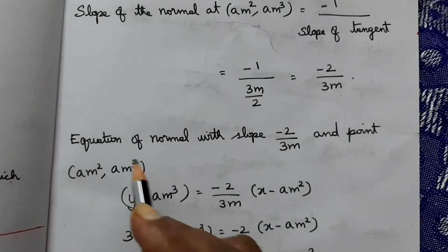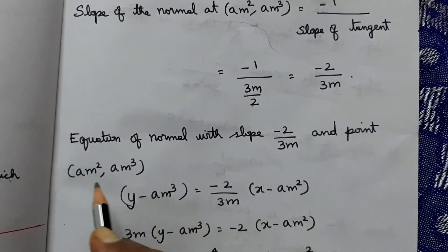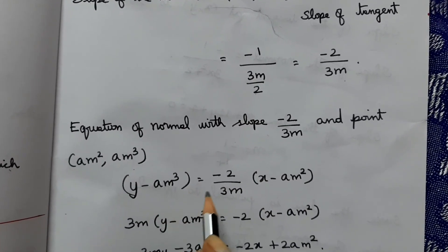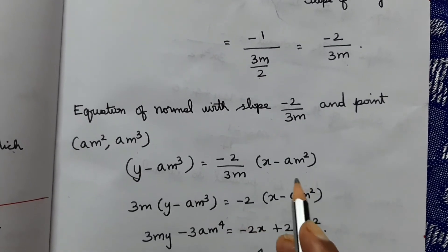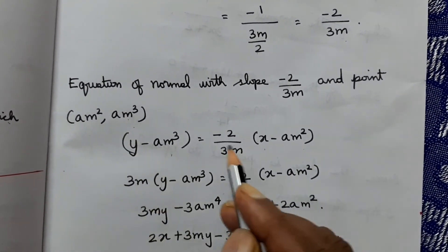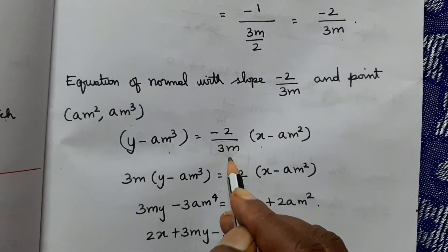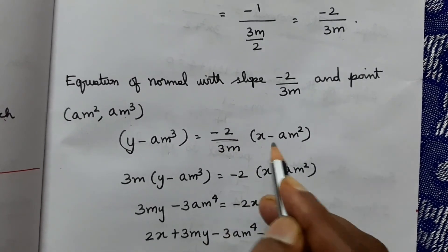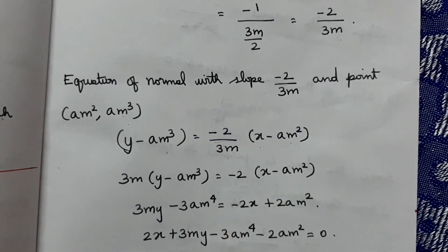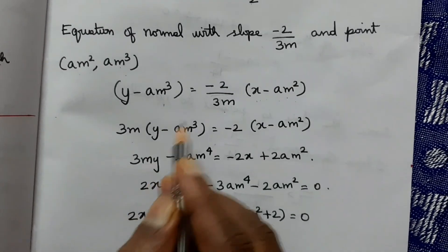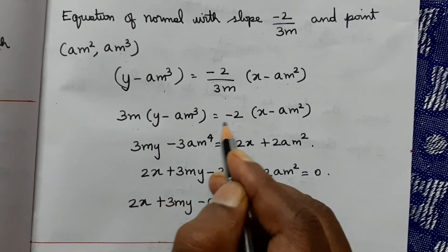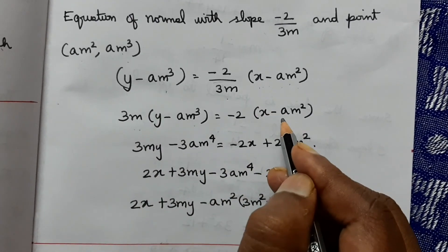Using the equation of the normal at point (am², am³) with slope -2/(3m): y - am³ = (-2/3m)(x - am²). Multiplying through by 3m: 3my - 3am⁴ = -2x + 2am².